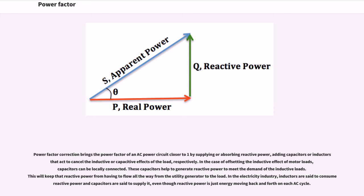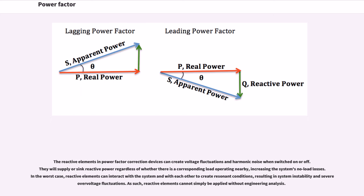The reactive elements in power factor correction devices can create voltage fluctuations and harmonic noise when switched on or off. They will supply or sink reactive power regardless of whether there is a corresponding load operating nearby, increasing the system's no-load losses. In the worst case, reactive elements can interact with the system and with each other to create resonant conditions, resulting in system instability and severe over-voltage fluctuations. As such, reactive elements cannot simply be applied without engineering analysis.